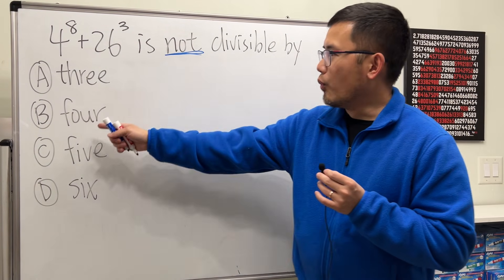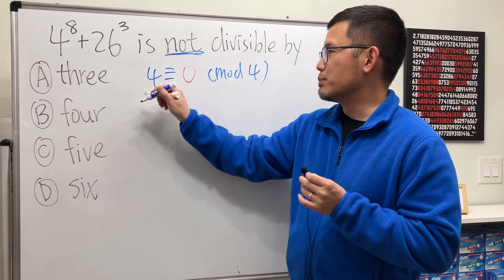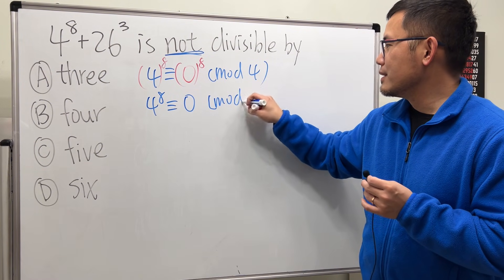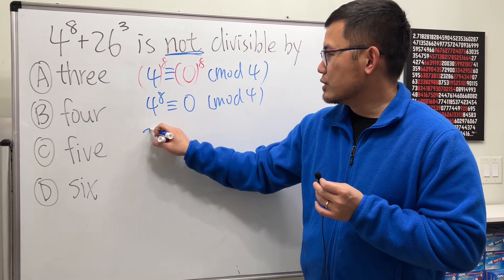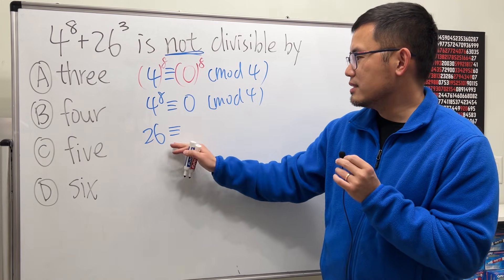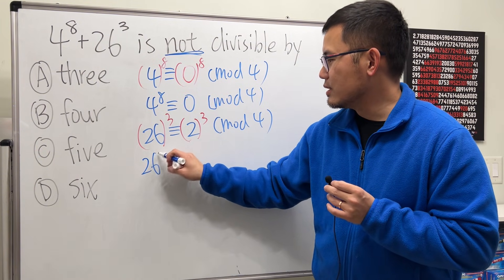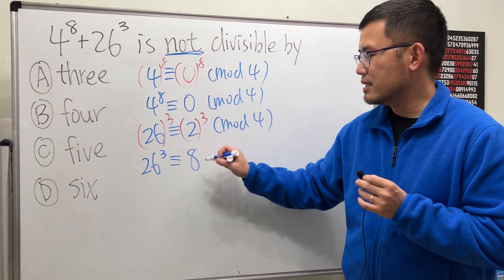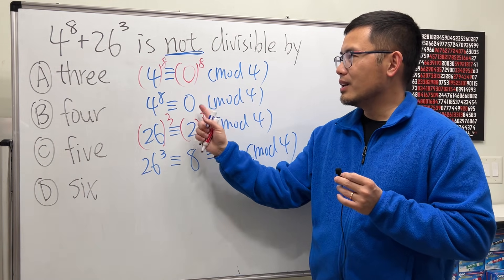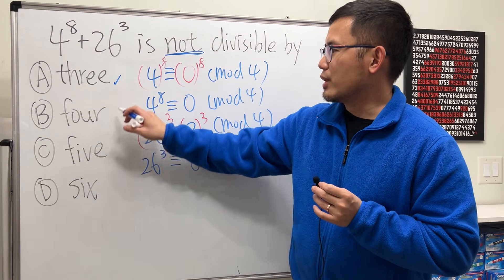Now let's try 4. Since 4 is congruent to 0 mod 4, raising both sides to the 8th power still gives 0 — so 4 to the 8th is congruent to 0 mod 4. For 26: 26 divided by 4 is 6 with remainder 2, so 26 is congruent to 2 mod 4. Raising to the 3rd power: 2 to the 3rd is 8, and 8 divided by 4 has remainder 0, so 26 to the 3rd is congruent to 0 mod 4. Both parts are 0, so the expression is divisible by 4.